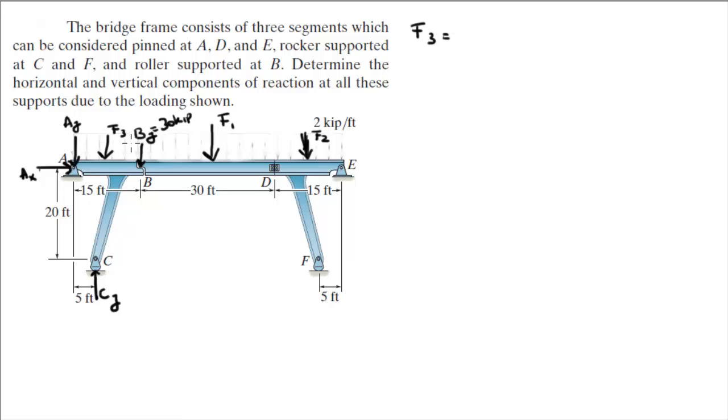So, we got F3, which is found. We got BY. We found on the first step when we were working with the first member. CY you can solve with some basic algebra and you get that CY is equal to 135 kilopounds.